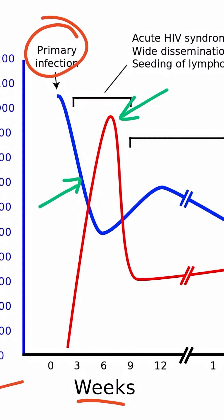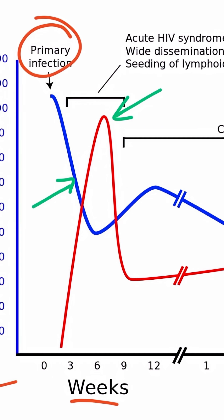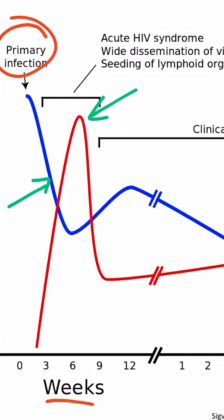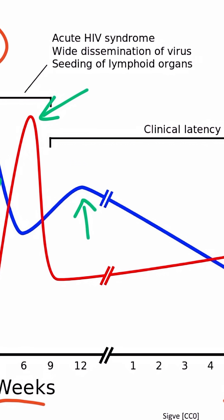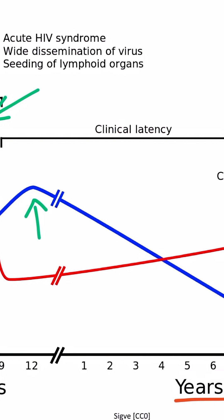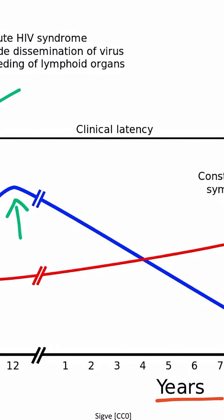The host begins to fight off the infection using CD8-positive T-cells, which eliminates some of the viruses and allows the CD4 count to slightly rise. Here, the virus and immune system have a tug-of-war, and there is a period of clinical latency.